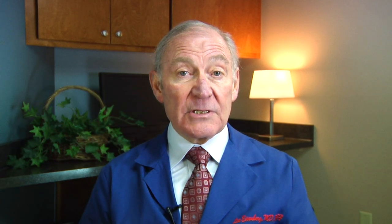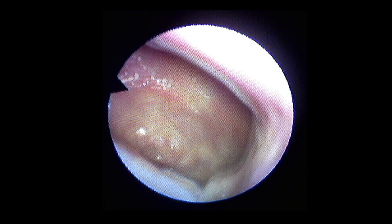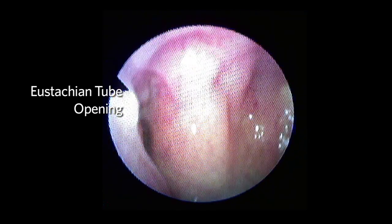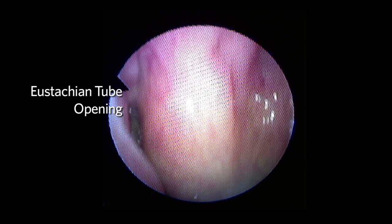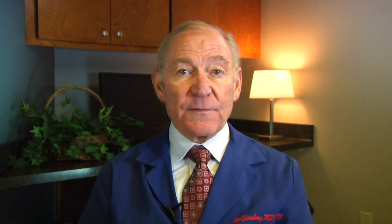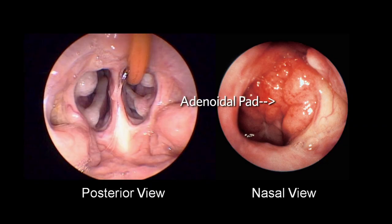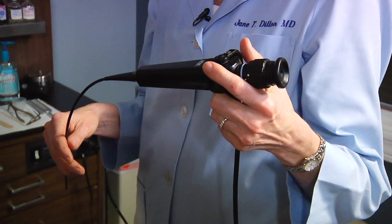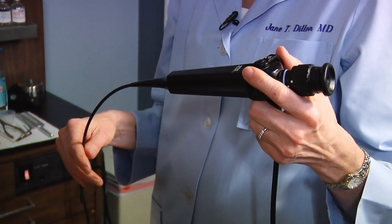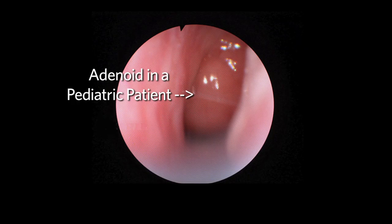Occasionally, one may see the superior turbinate on nasal endoscopy. If you continue posteriorly along the floor of the nose, the opening of the eustachian tube is seen laterally. This area is known as the fossa of Rosenmüller. As the nasopharynx is seen, one may view the adenoidal pad if it still exists. If one specifically wants to view the nasopharynx, a flexible endoscope is preferable. In the pediatric age group, it is used to evaluate adenoidal size.